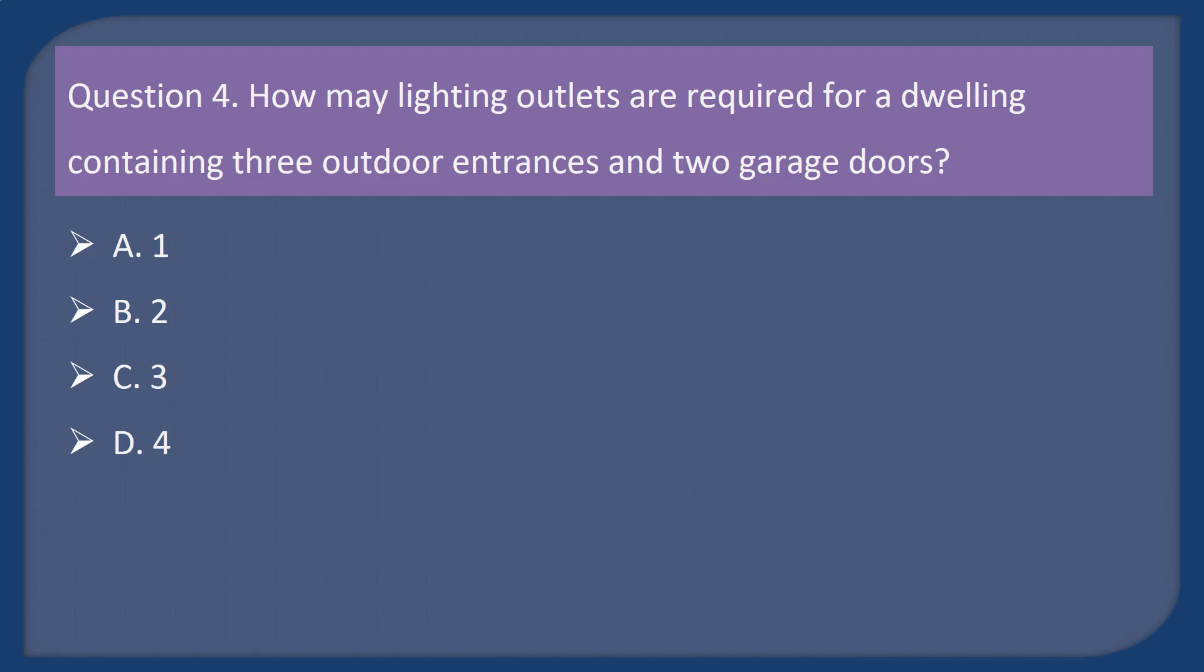Question 4. How many lighting outlets are required for a dwelling containing three outdoor entrances and two garage doors? A. 1. B. 2. C. 3. D. 4.